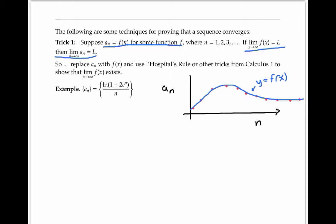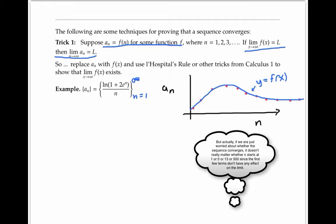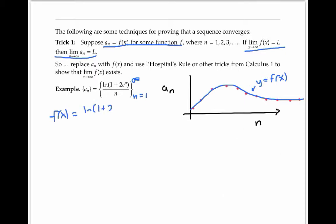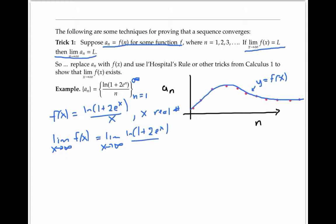Let's try that for the following example. When indices are missing, we'll assume n starts at one and goes to infinity. To prove this sequence converges, let's look at the function f(x) = ln(1 + 2e^x) / x, where x is a real number. As x goes to infinity, e^x goes to infinity, so 1 + 2e^x goes to infinity, which means ln of that goes to infinity. So the numerator goes to infinity, and so does the denominator — we have an infinity over infinity indeterminate form. So we can apply L'Hôpital's rule and take the derivative of the numerator over the derivative of the denominator.